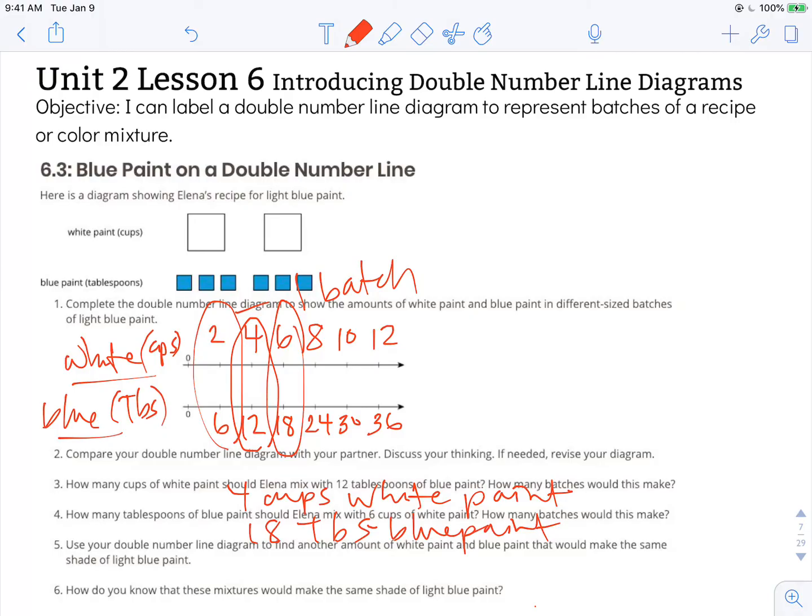So if I look right here I have one batch, two batch, three batches, four batches, five batches, six batches. If I wanted to make six times as much of this light blue paint, I could use 12 cups of white paint and 36 tablespoons of the blue paint and I'd probably want to find an equivalent so I wouldn't have to measure tablespoons at a time. I'd want to see how much is that in maybe cups or something else that I could use to measure that quickly.